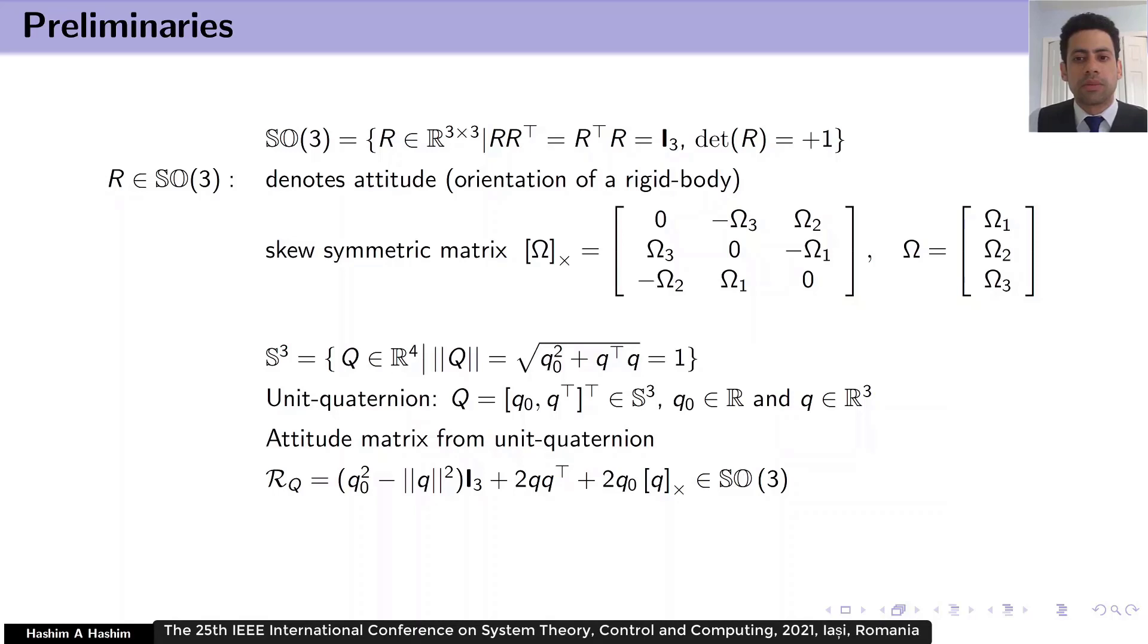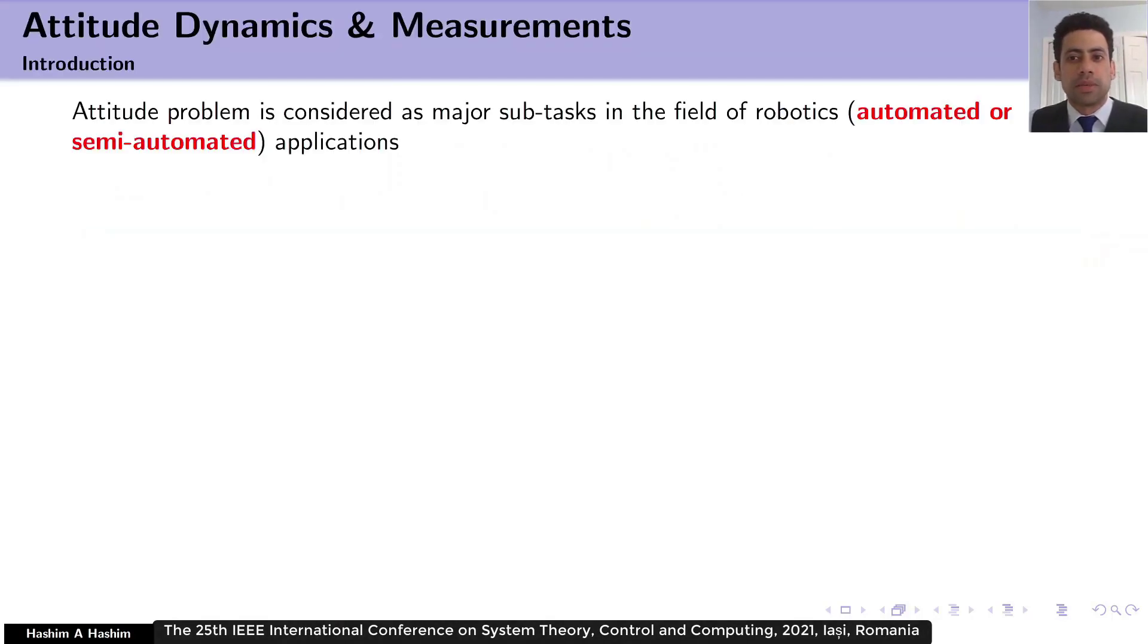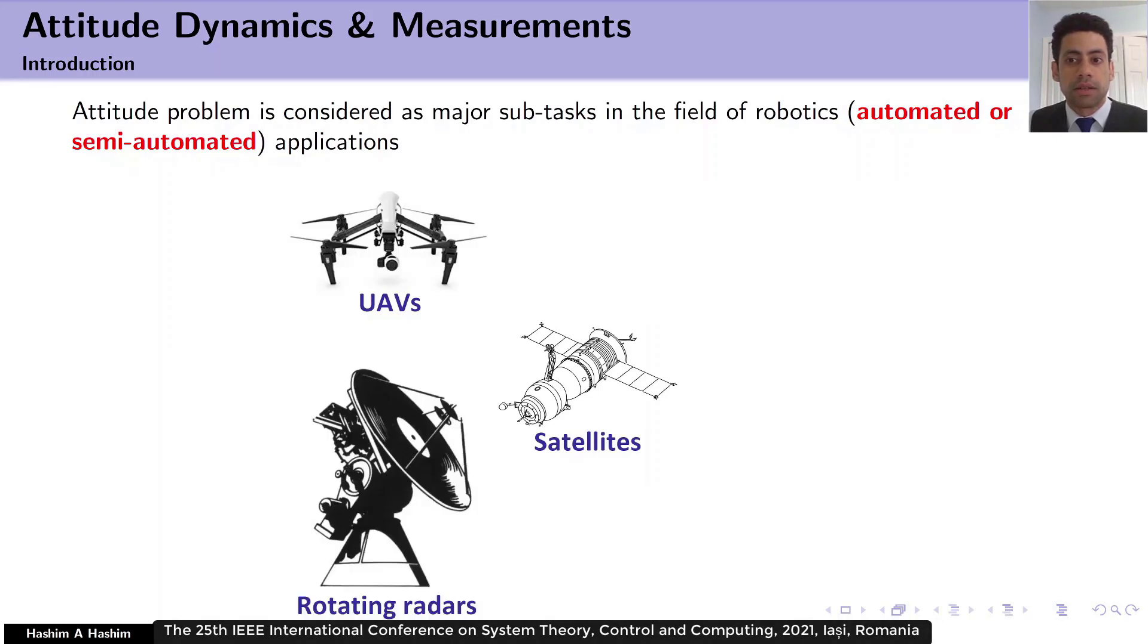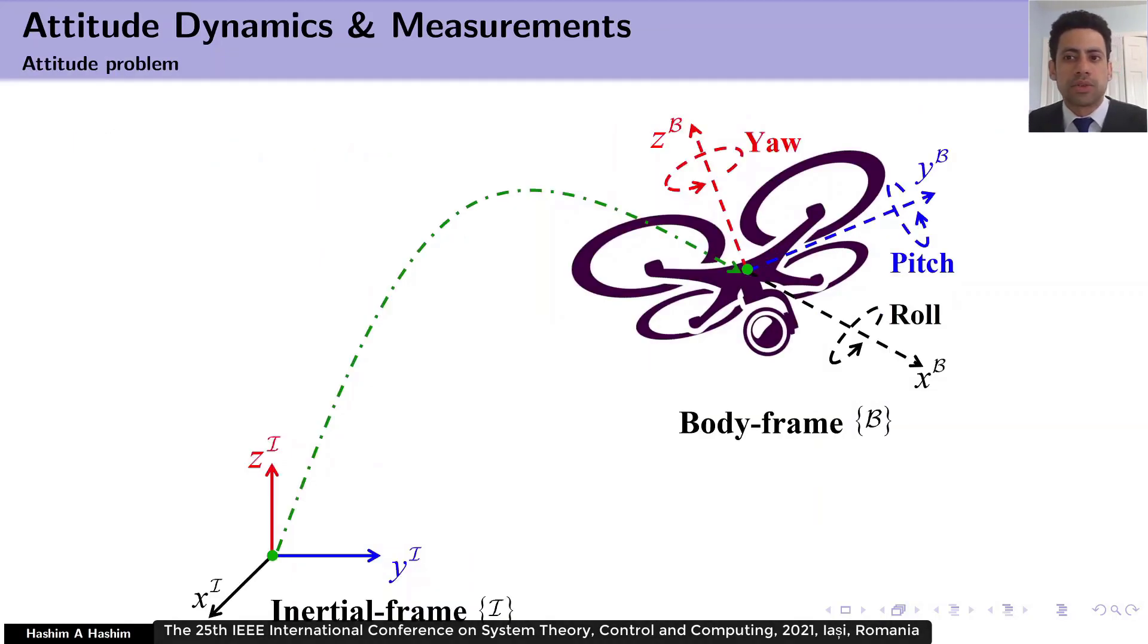Now let's go to attitude dynamics and measurements. The attitude estimation problem is a major subtask in the field of robotics and control applications, especially automated and semi-automated applications. It is very important for the operation of unmanned aerial vehicles, satellites, rotating radars, underwater vehicles, ground vehicles, and many more.